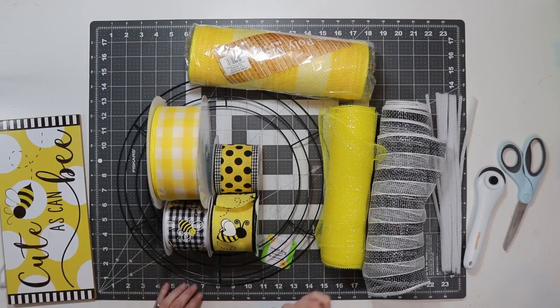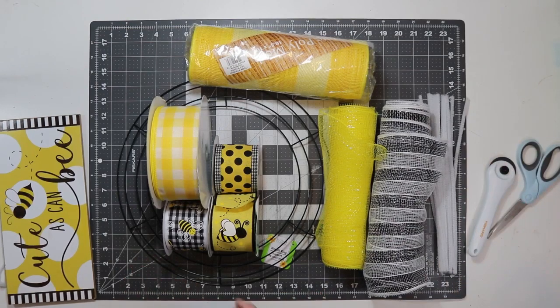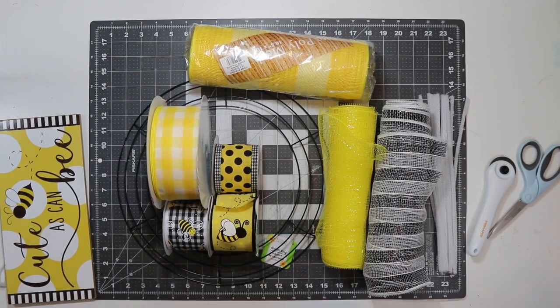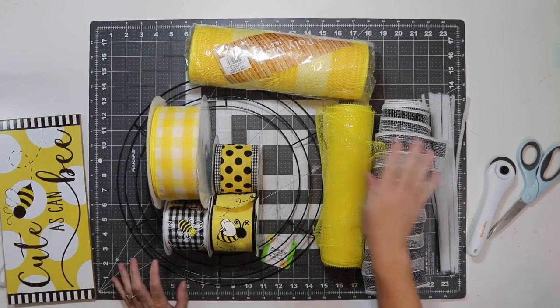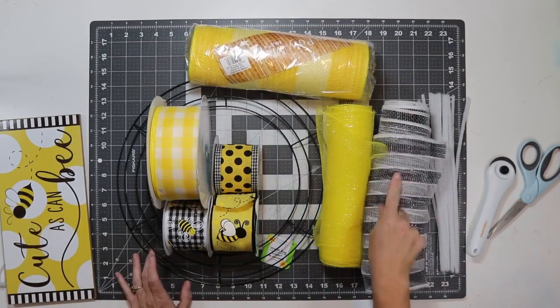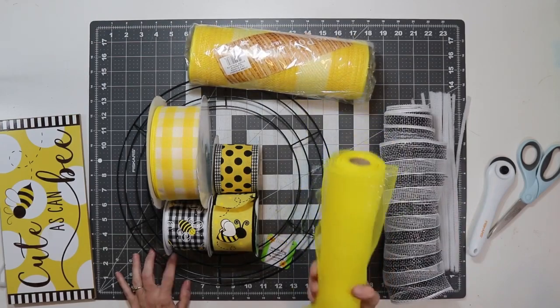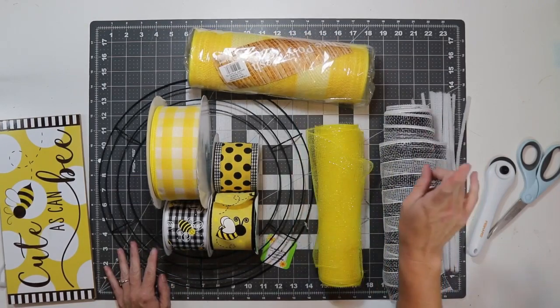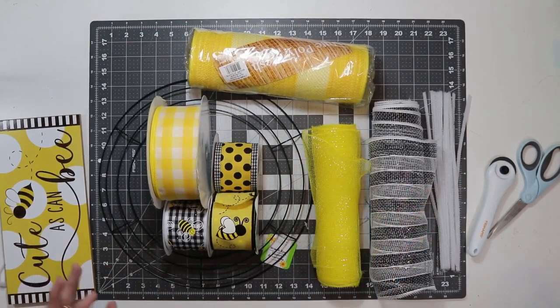I am going to do a double cruffle method. When I did my wreath the other day with the cruffles, that gave me an idea to do like opposite cruffles, and I'll show you what I mean as I go. Ideally, I would do a whole roll of this and a whole roll of this. I only have half a roll, so I am going to fill in with this yellow. You'll see what I'm talking about as I go.